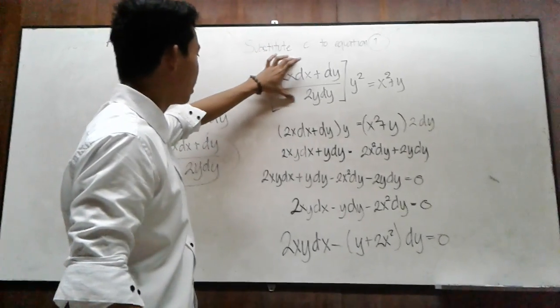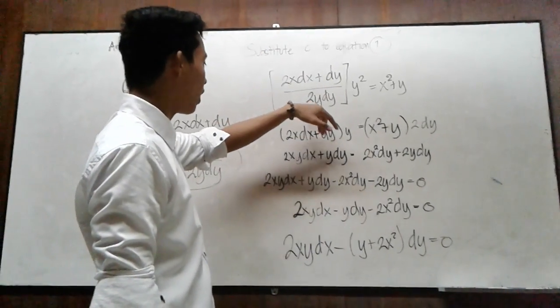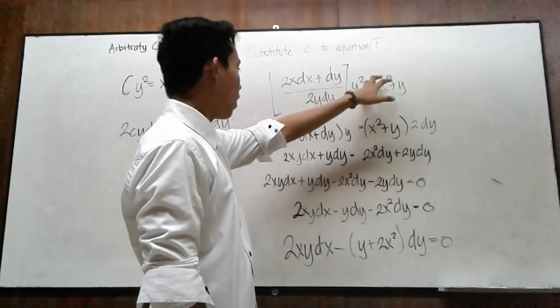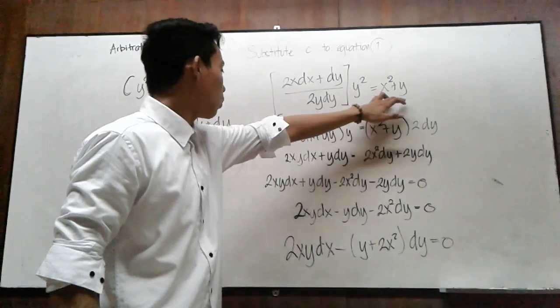In substitution of C in equation 1, you will come up with 2x dx plus dy over 2y dy in closed parentheses times y squared equals x squared plus y.